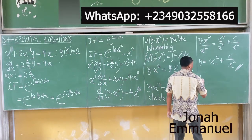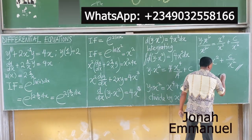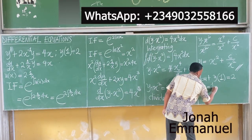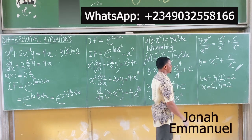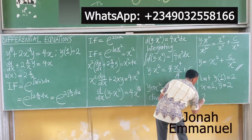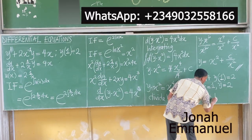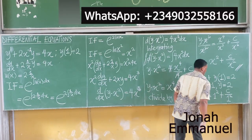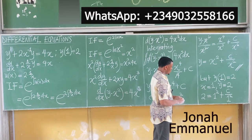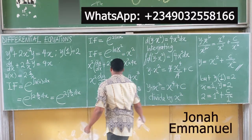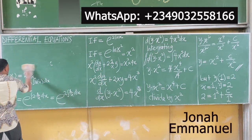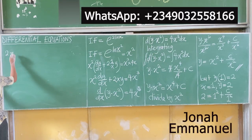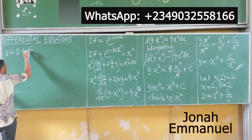The initial condition is y(1) = 2, meaning when x = 1, y = 2. Substituting into the general solution: 2 = (1)² + C/(1)². Wherever I see x I put 1, and wherever I see y I put 2.